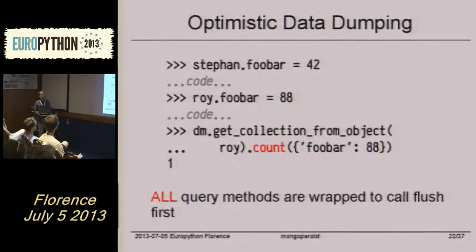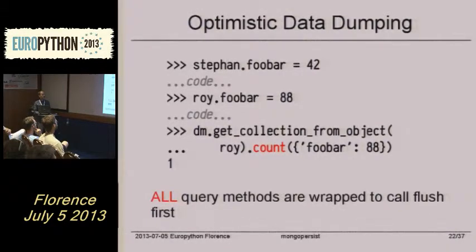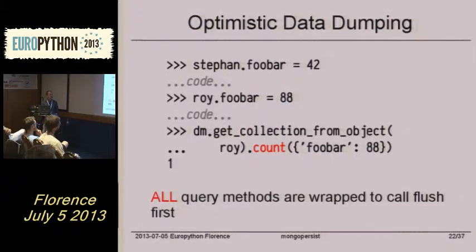Here is my example for optimistic data dumping. I change a few attributes — I could have a lot of code in between — and note there is no transaction commit, because the transaction is not done yet. But I need to count the number of full bar objects which I just set. So if there would be no flushing before the querying, the count would return probably zero, which is not what I want.